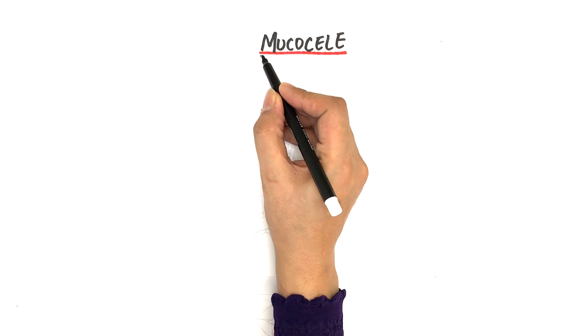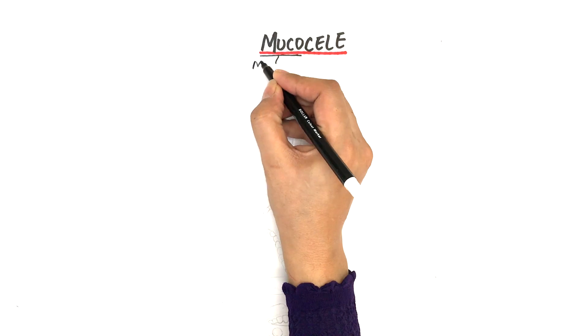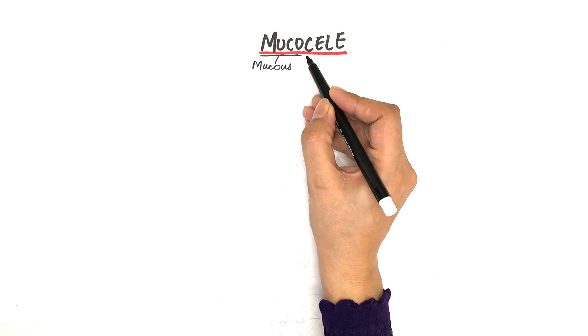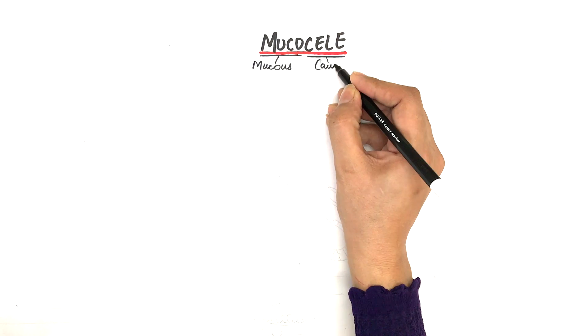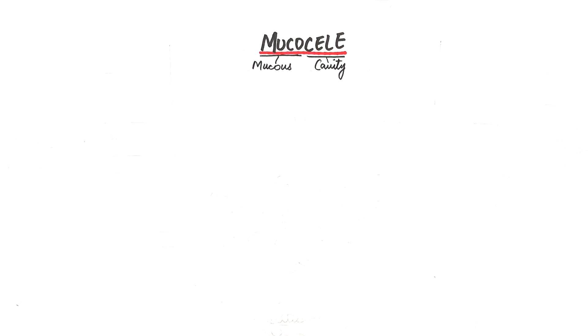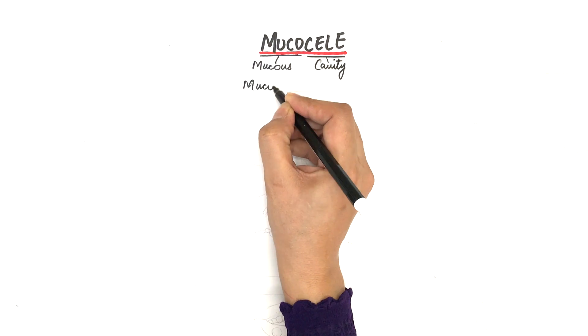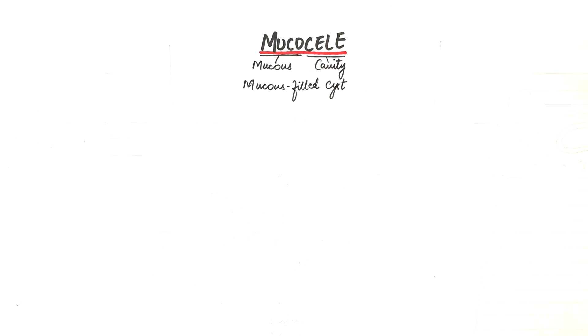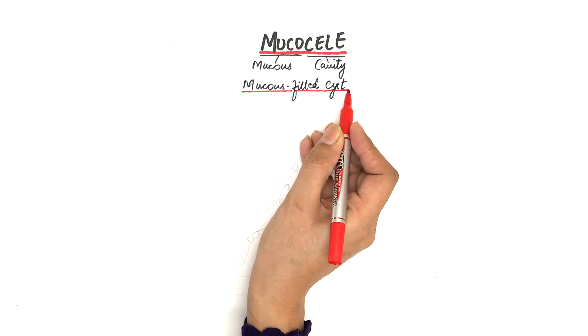The term mucosal was derived from a Latin word. Muco stands for mucus and sil means a cavity. Therefore, mucosal is defined as a mucus-filled cyst that may appear in the oral cavity.